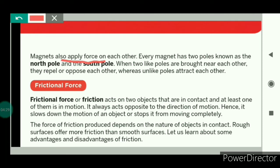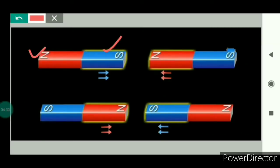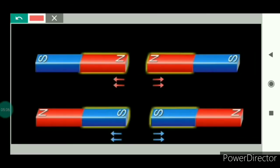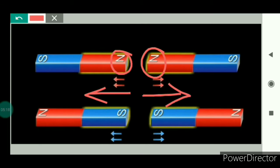Magnets also apply force on each other. Each magnet has two poles: north pole and south pole. When two different poles of two different magnets are brought close to each other, the magnets attract each other — unlike poles attract each other, meaning the different poles come closer. As we can see in this figure, when the same poles of two different magnets are brought closer, they repel each other — they move away from each other. So like poles repel each other and unlike poles attract each other.